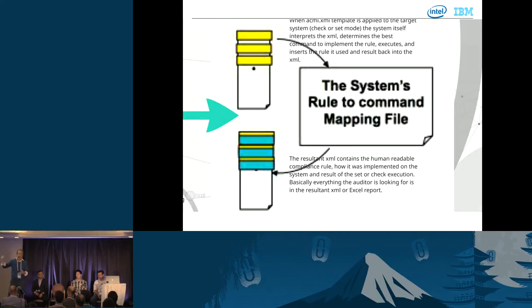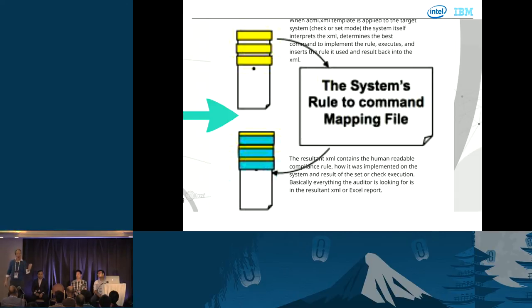What we have now is the human-readable part, how the device implemented it, and success or failure — completely compliance auditor ready. You can export this to an Excel spreadsheet. We put it in Logstash and run it in a check mode to make sure the configuration holds. We push the template and the device sets itself or just reports on itself. We compare to the baseline, push to Logstash, and when the auditor comes, we have all the artifacts to help pass our compliance.